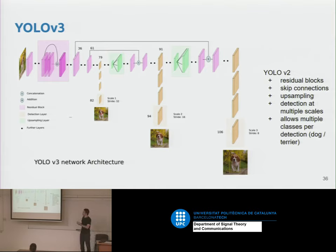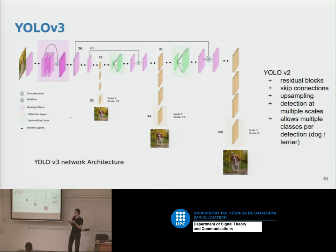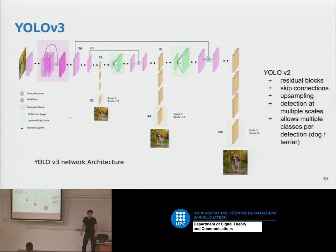YOLO v3 works at multiple scales, introduced a new neural network using residual blocks and skip connections. They also implemented it in C, making it very fast, though modifying the architecture is somewhat of a nightmare.